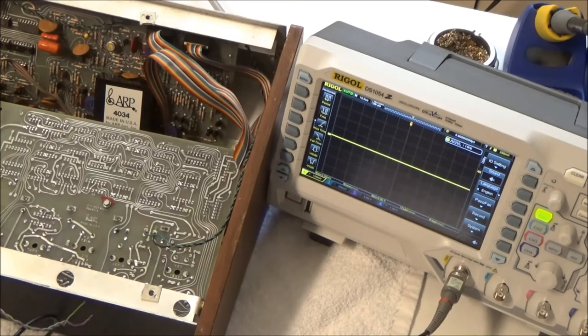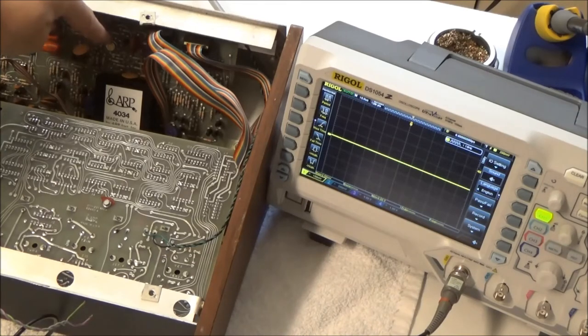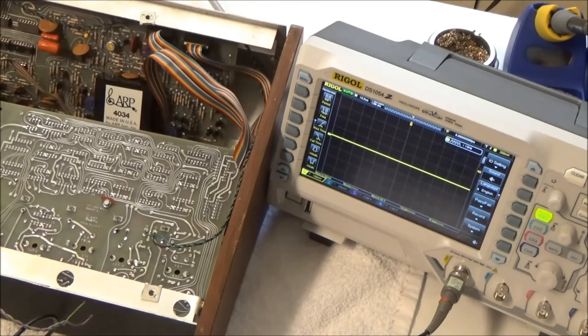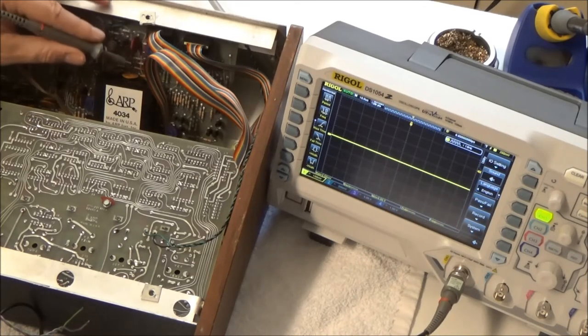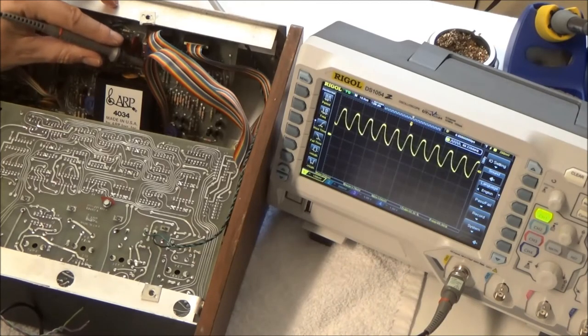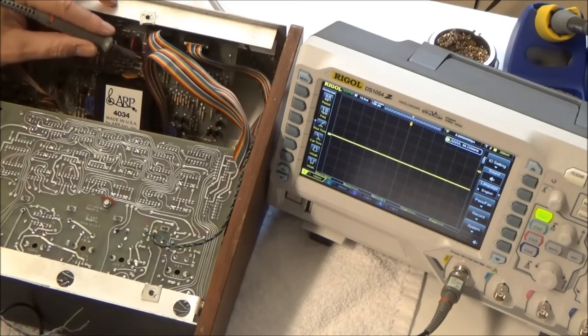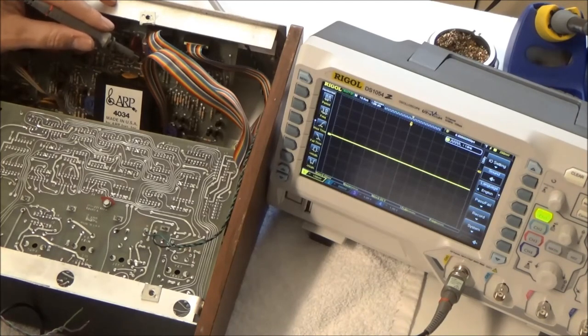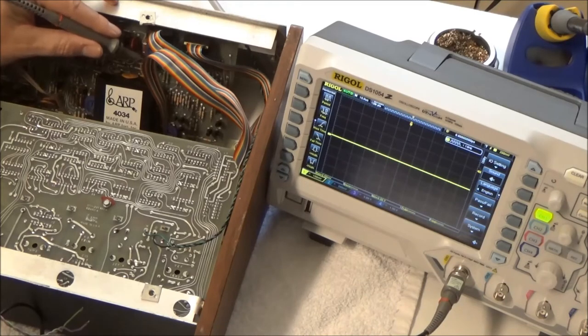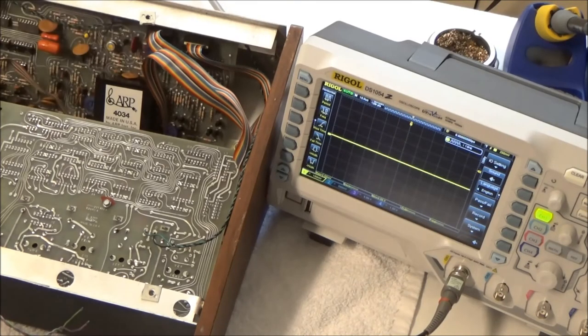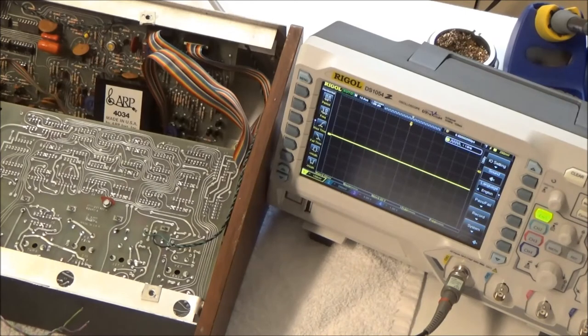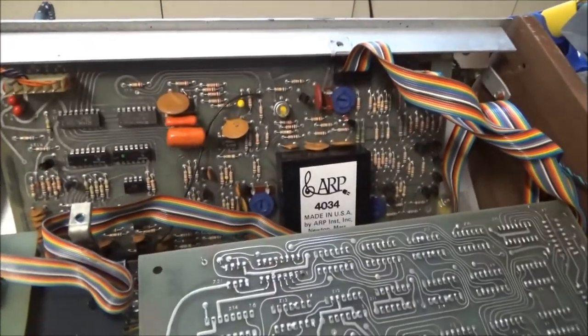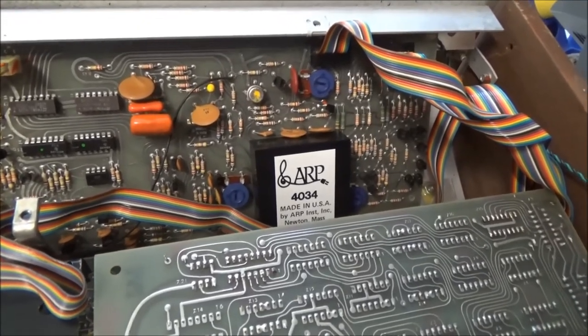In trying to figure out where this bleed through the VCA comes from, basically the VCA control voltage comes in from board B into board C and it's fed to the control pin of this CA3080 chip, which is pin 5. But before it goes there, it goes through this transistor here. And if I probe the base of this transistor, the bleed through goes away. If I probe the collector of this transistor, which is the output, it gets louder. The first logical step would be to check out this transistor because when I'm touching it, weird things are happening.